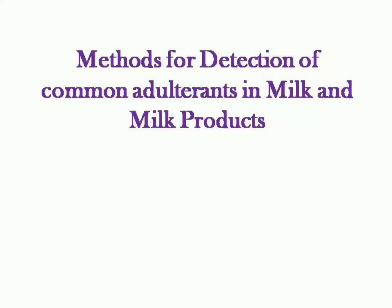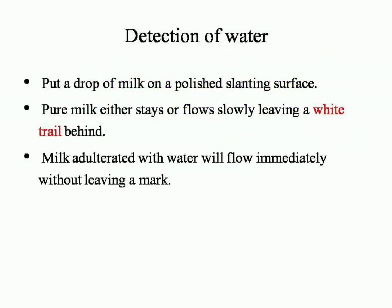The major adulterant in milk is water. To test it, put a drop of milk on a polished slanting surface. Pure milk either stays or flows slowly, leaving a white trail behind.